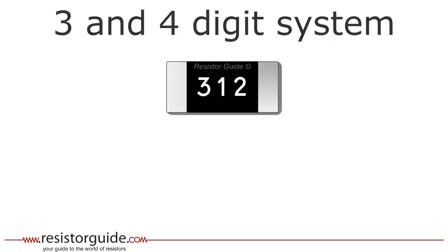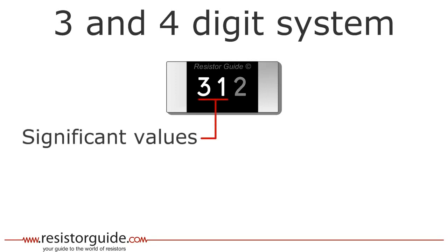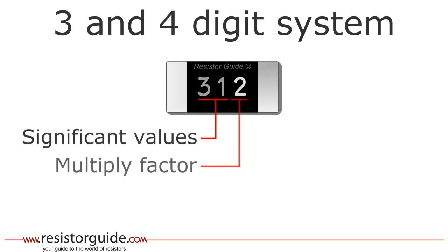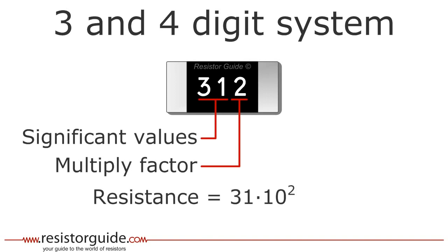Let's take an example of a 3 digit code. The first two digits represent the significant values of the resistance. The third digit represents a power of 10 multiply factor. The resistance value is therefore 31 times 10 to the power of 2, which leads to 3100 ohms.